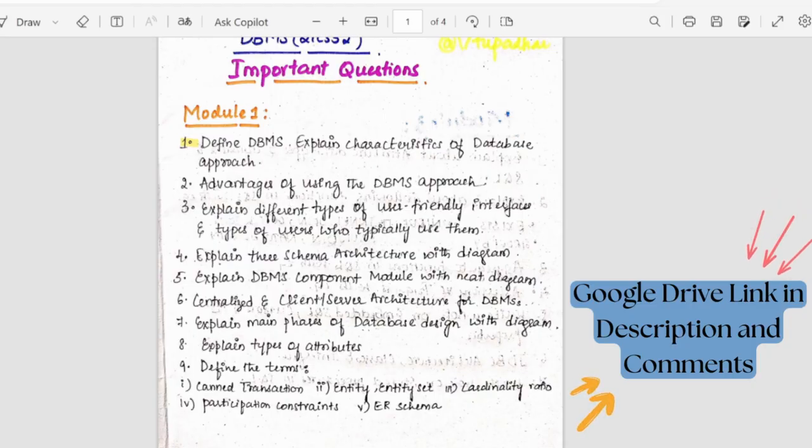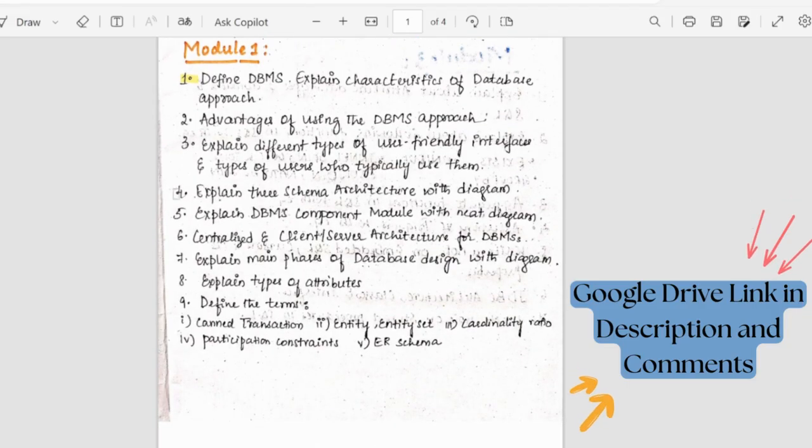Then we have types of user-friendly interfaces and types of users. This is also an easy question. Then there's a short question about three schema architecture.